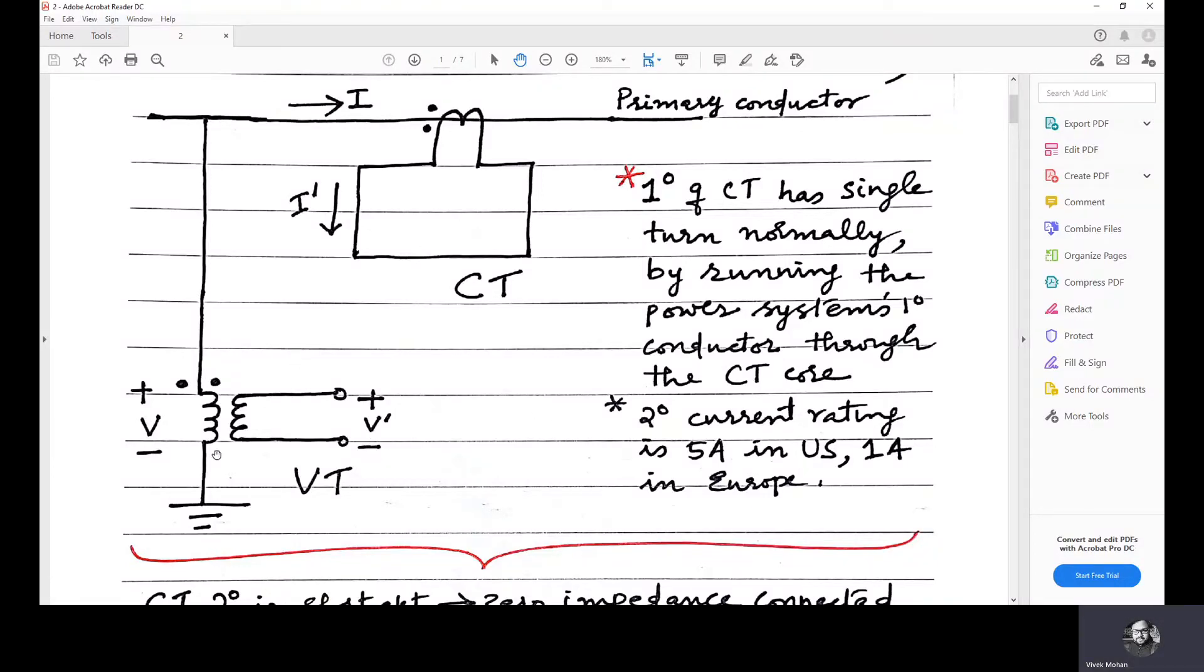Now, for this VT, we have the power system voltage as V and the secondary voltage as V dash at which the relay operates.